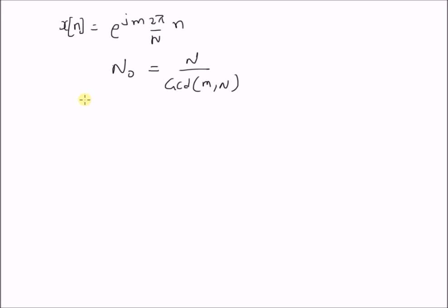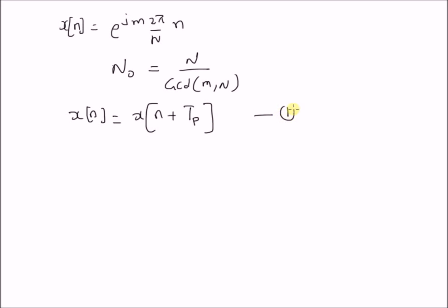Since x(n) is a periodic signal, by definition x(n) is equal to x(n + Tp) — this is equation 1. Note that the period Tp belongs to the set of natural numbers, since we are dealing with discrete signals, so the period Tp should be a natural number.